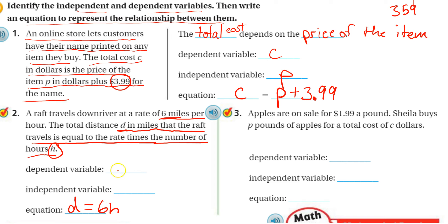So the dependent variable is the D, distance. And the independent variable is the hour. That's what's going to change.